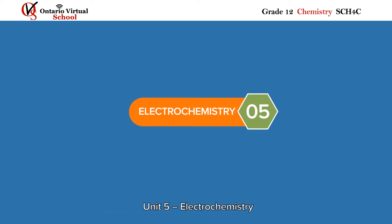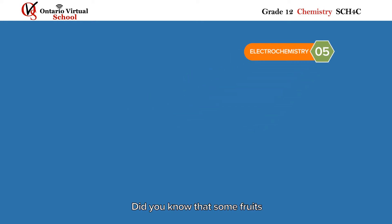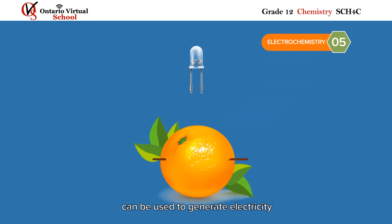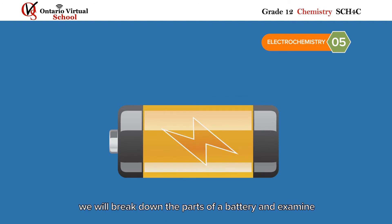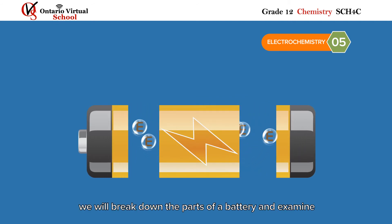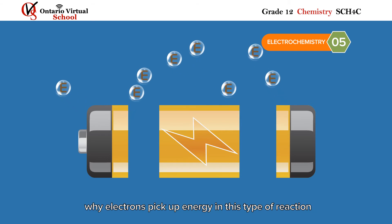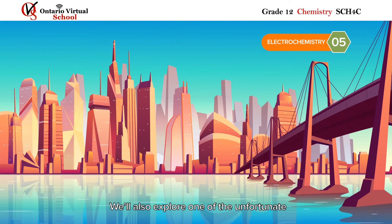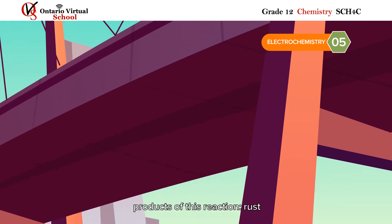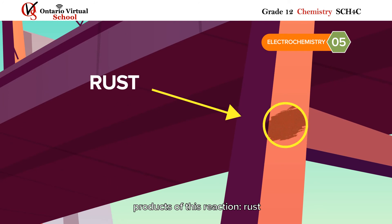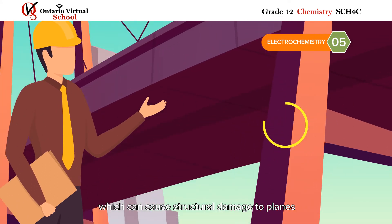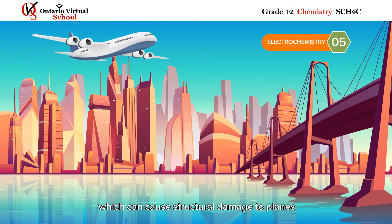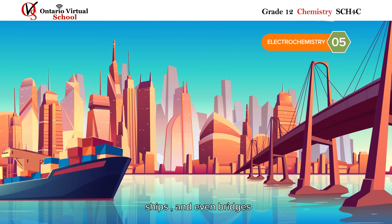Unit five: electrochemistry. Did you know that some fruits can be used to generate electricity? In our final unit we will break down the parts of a battery and examine why electrons pick up energy in this type of reaction. We'll also explore one of the unfortunate products of this reaction — rust — as well as the various techniques that engineers over the years have created to prevent rusting, which can cause structural damage to planes, ships, and even bridges.